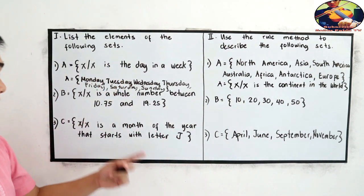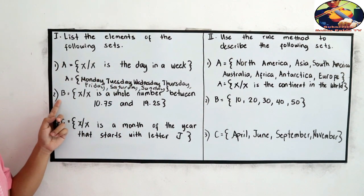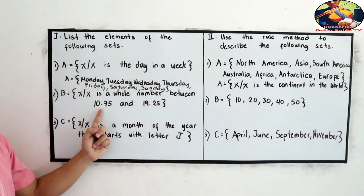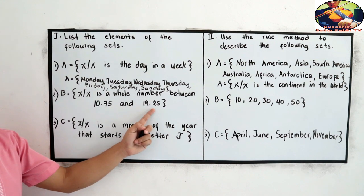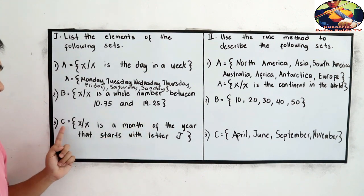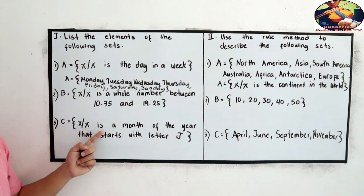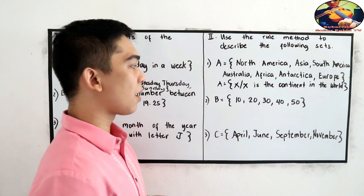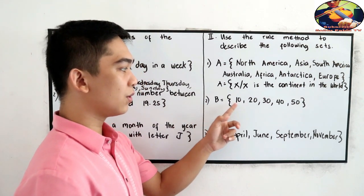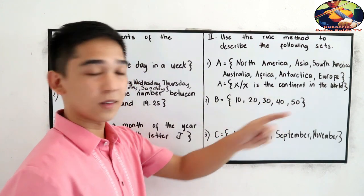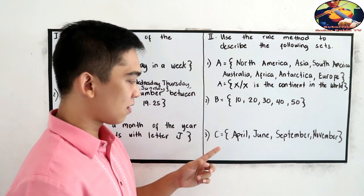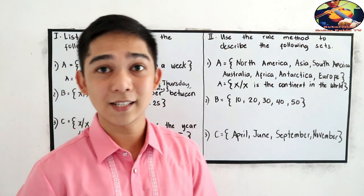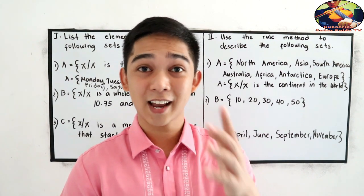Now, I want you to answer number 2. Set B is equal to x such that x is a whole number between 10.75 and 19.25. Number 3, set C is equal to x such that x is a month of the year that starts with letter J. And for the part 2 number 2, set B is equal to 10 20 30 40 50, and letter C, number 3, set C April June September and November. So you can pause this video then start answering then let's check later.